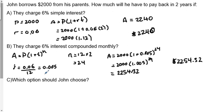So which option should John choose? If we look at the two options, John should choose simple interest because it's going to cost him less money.